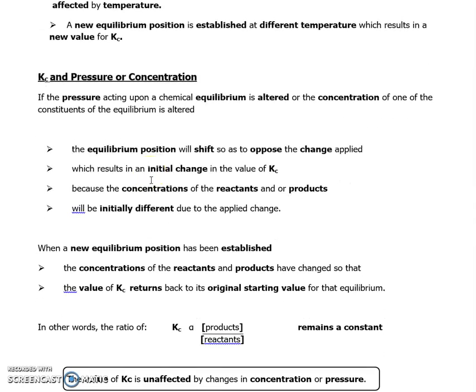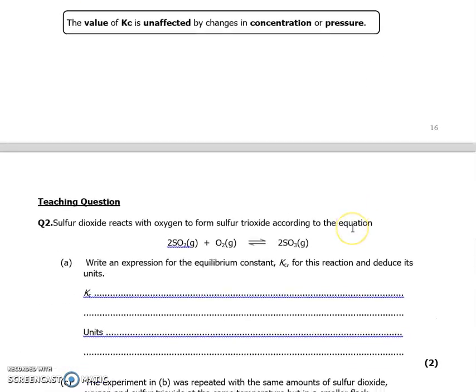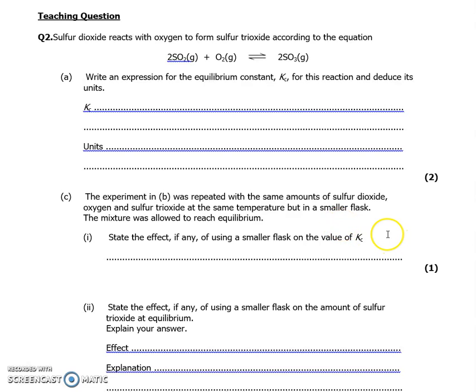So the examiners love to ask a question about how would Kc change if you increase the pressure or increase the concentration in an equilibrium. But the answer is Kc does not change. You will be able to increase the equilibrium yield of a product or a reactant, but the value of Kc itself does not change. It remains a constant. So again, Kc is unaffected by any changes in concentration or pressure.